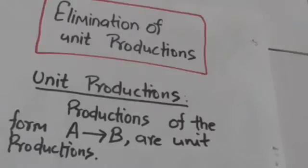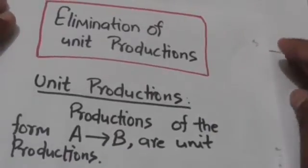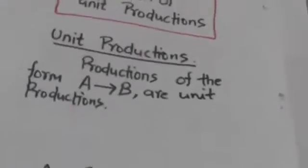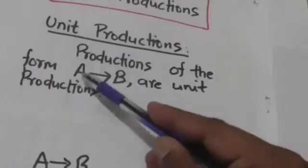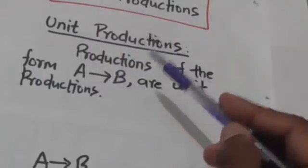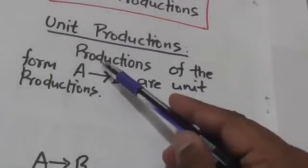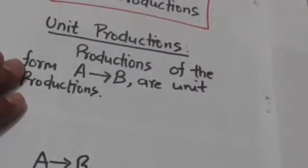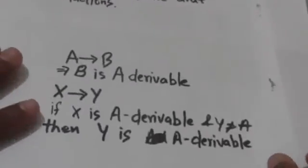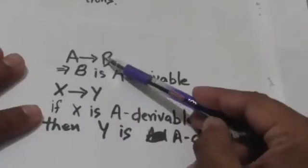Hello friends, welcome back. In this tutorial we will study about the elimination of unit productions. Unit productions are productions of a context-free grammar which are of the form A derives B, where A and B are variables. So unit productions are those productions of a context-free grammar in which there is only one variable on the right-hand side.